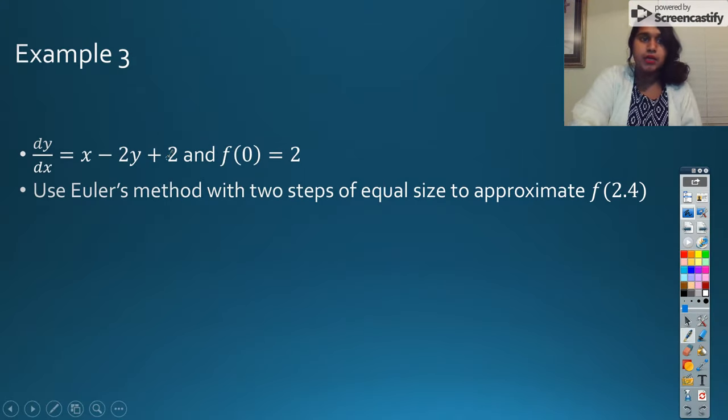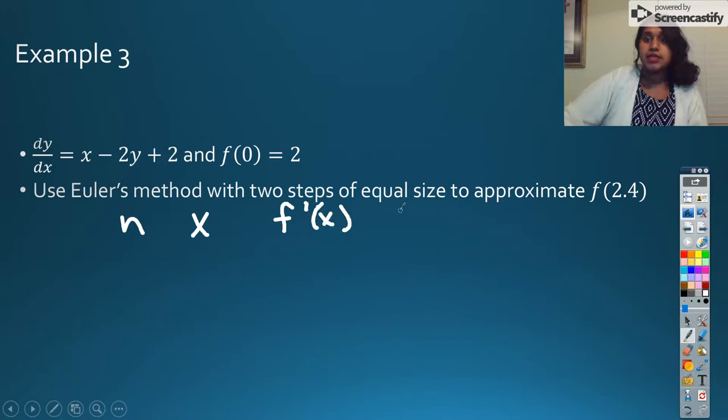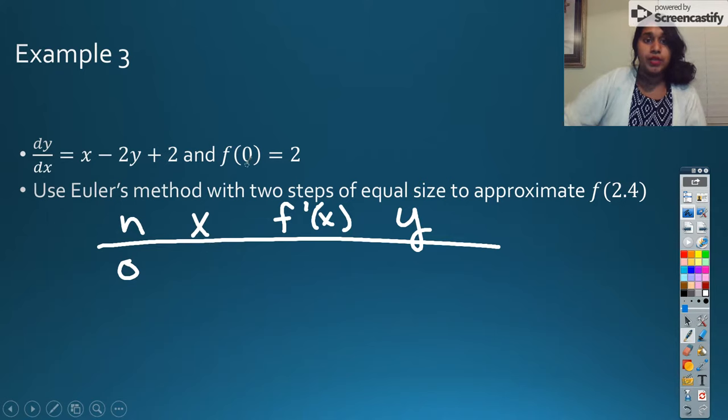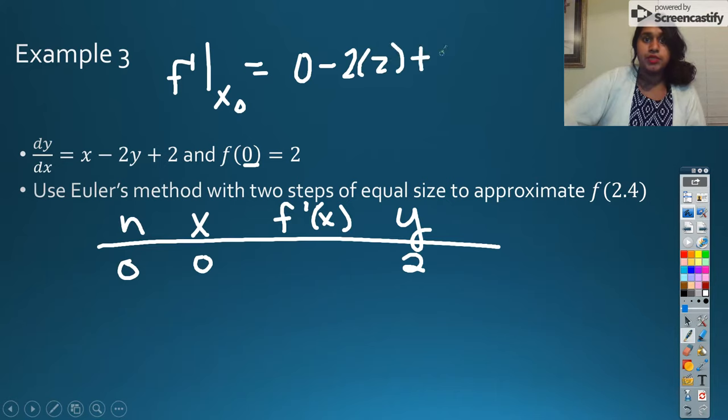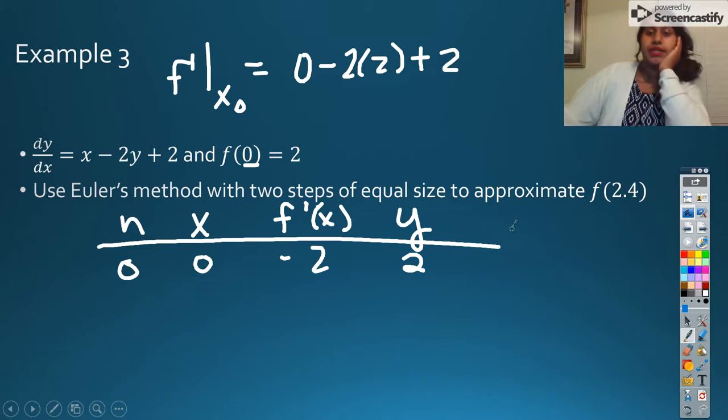Okay. Example 3, here we go. Okay, so same thing. I'm going to need an x. I'm going to need f prime of x. And I'm going to need a y. So let's go ahead and fill out the information we know. In our initial value, we know our initial x is 0. We know our initial y is 2. And if I plug that in, I'm going to do all that up here. Then I know that my f prime of my initial value would be 0 minus 2 times 2 plus 2. So negative 4 plus 2. So negative 2. So then I'm going to go ahead and take that moment to calculate my next ones.